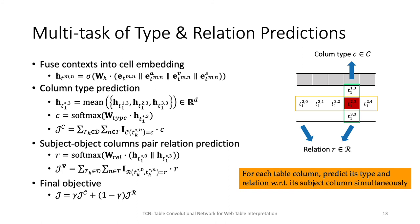For obtaining the final cell representation, we concatenate the original cell embedding with all intra-table and inter-table context embeddings we generated and apply a linear transformation. Because the column type and pairwise relation predictions are both on the column level, we generate the column embedding as the mean of its cell embeddings. We then use a single-layer feedforward network with softmax to output the predicted column type distribution, and similarly concatenate the embeddings of a column pair and use a single-layer network to generate the predicted relation distribution. The final objective is a convex combination of these two prediction tasks with cross-entropy loss.